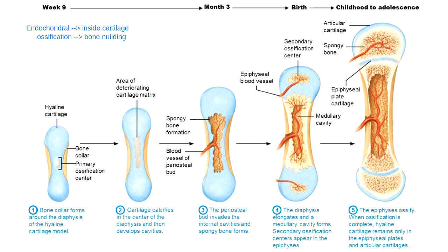So we're building bone tissue inside cartilage, specifically inside a type of cartilage called hyaline cartilage. Remember there are three kinds of cartilage in the body: fibrocartilage, which has a bunch of collagen fibers in it; hyaline cartilage, which is the squishy kind used to build this model; and elastic cartilage, the kind in your ears.